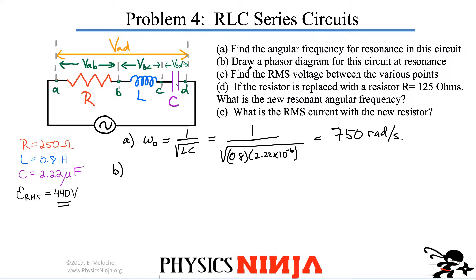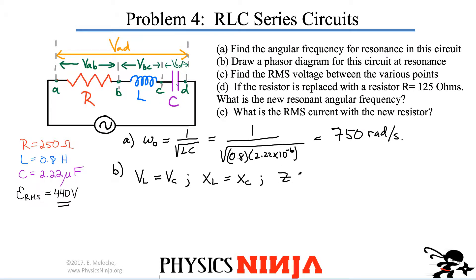Part B says: draw a phasor diagram. Remember, we're at resonance here. At resonance, the maximum voltage amplitude across the inductor equals the amplitude across the capacitor. That means the reactance of the inductor equals the reactance of the capacitor. As a result, the total impedance of the circuit simply reduces to the total resistance.